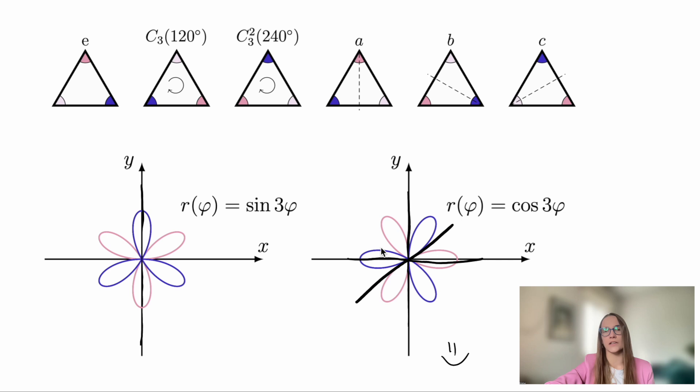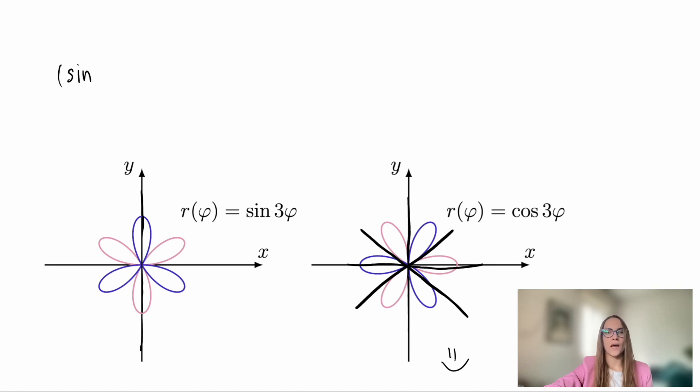For instance, if we reflect these functions across the vertical plane, it changes its sign. The same happens when reflecting across the other two planes. On the other hand, the second function does not change its sign even under such reflections. It remains itself always under all possible transformations of the triangle group.